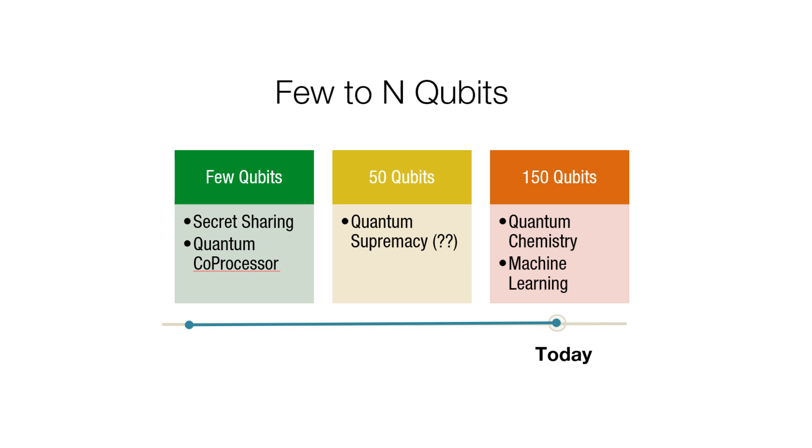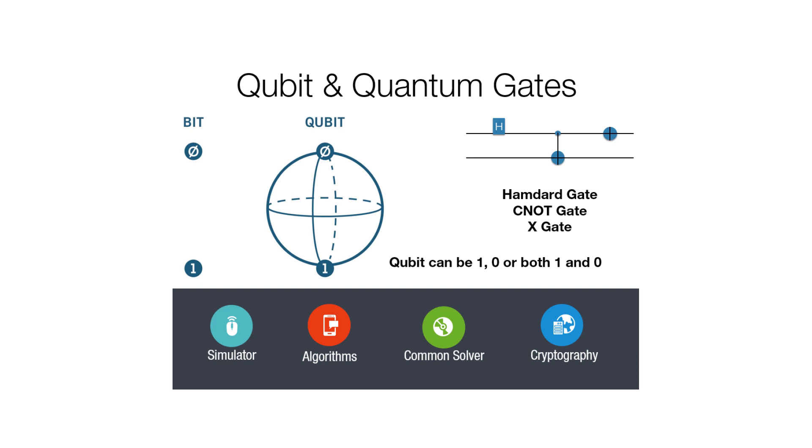How did this change, moving from qubit to qubit? You have multiple qubits that started with secret sharing and quantum co-processors. At 53 qubits, we thought quantum supremacy was achieved. At 150 qubits, quantum chemistry and machine learning algorithms can be used. In terms of the classical computer, we have bits. Bits have one of two states: 0 or 1. A quantum qubit can be 0, 1, or any quantum superposition between 0 and 1. We have different gates — Hadamard gates, CNOT gates, and X gates — plus quantum simulators, algorithms, solvers, and cryptographic algorithms using quantum bit systems.